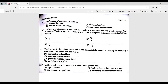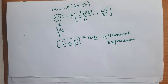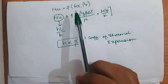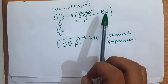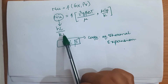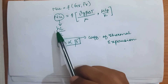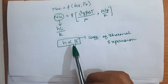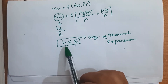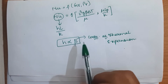Question 1.10: heat transfer by natural convection is enhanced in systems with what property? In natural convection, the Nusselt number is a function of the Grashof number and the Prandtl number. The Nusselt number equals hL/k, where h is the heat transfer coefficient. The heat transfer will be enhanced in a system with a high coefficient of thermal expansion.